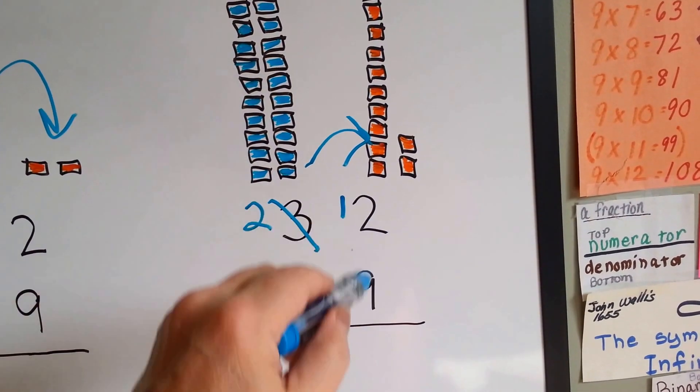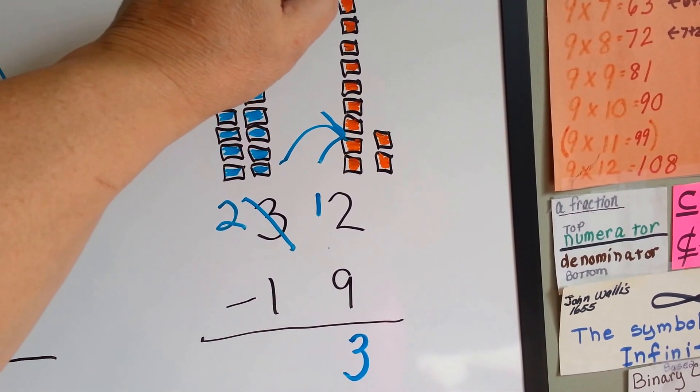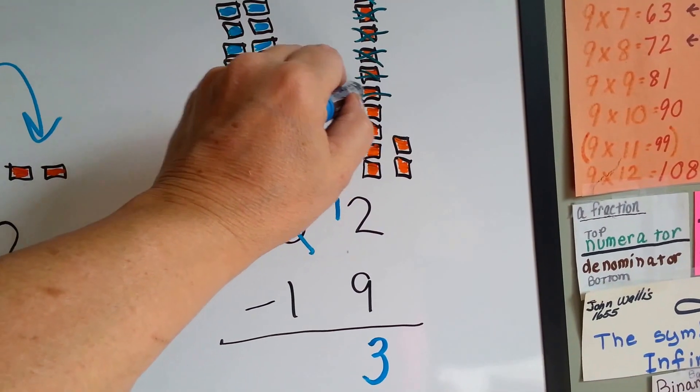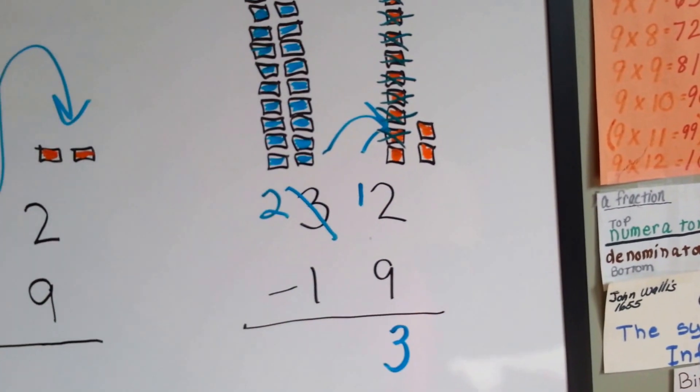Now you can have 12 and take 9 away, and that's going to leave 3. Take away 1, 2, 3, 4, 5, 6, 7, 8, 9. And that's going to leave 1, 2, 3. See?